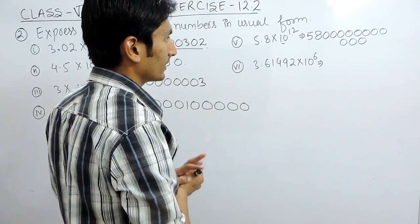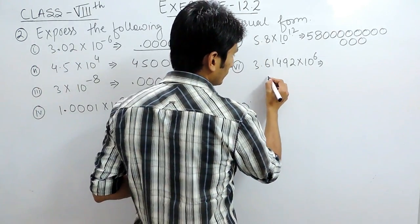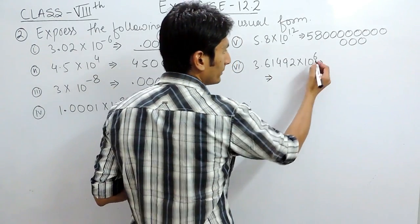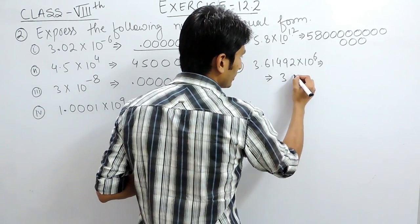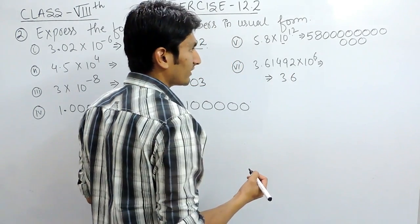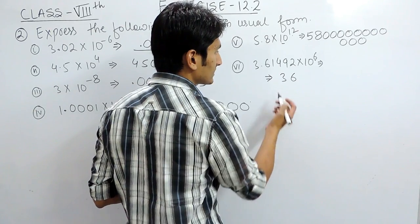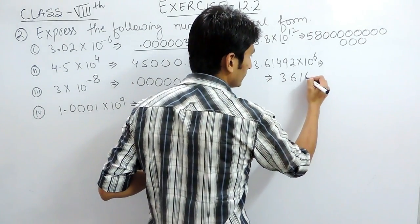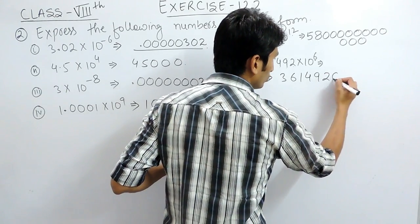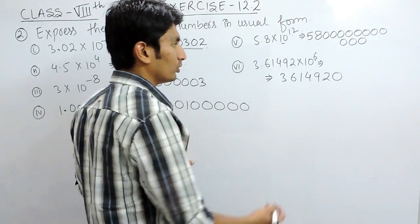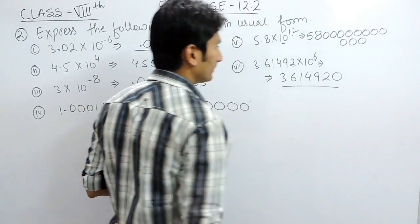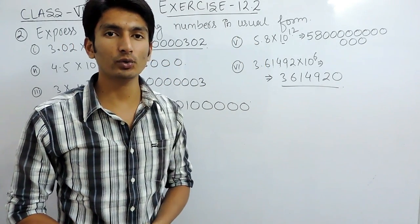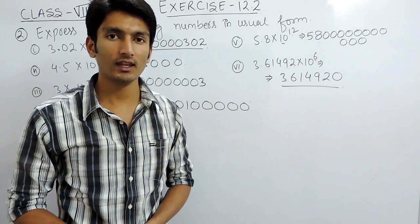In the last part, you have to convert this into the usual form. The power is plus 6, so shift the decimal to the right-hand side till 6 digits: 1, 2, 3, 4, 5 — and add another zero — to make our number this much. So this is how you can solve question 2 of exercise 12.2. Thank you.